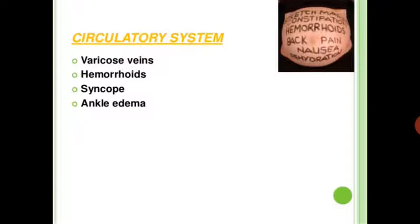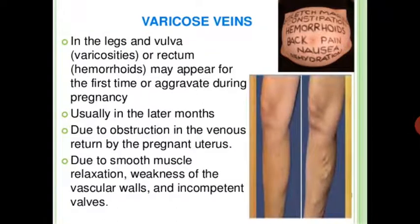Next is the circulatory system: varicose veins, hemorrhoids, syncope, and ankle edema. Varicose veins in the leg, vulva, or rectal hemorrhoids may appear for the first time or be aggravated during pregnancy, usually in the later months, due to obstruction in venous return by the pregnant uterus, smooth muscle relaxation, and weakness of the vascular wall.